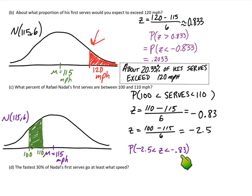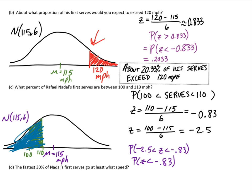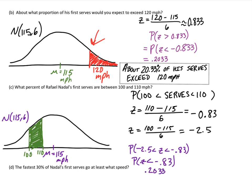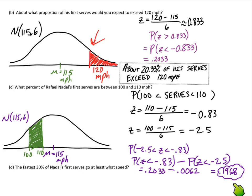Start with the upper bound: the proportion of z-scores less than negative 0.83 gives everything at 110 and below, but that answer is too big. So we subtract all the stuff at 100 and below. The proportion less than negative 0.83 is 0.2033; subtract the proportion less than negative 2.5, which is 0.0062, for a final value of 0.1968 — about 20%, which seems reasonable based on our drawing.